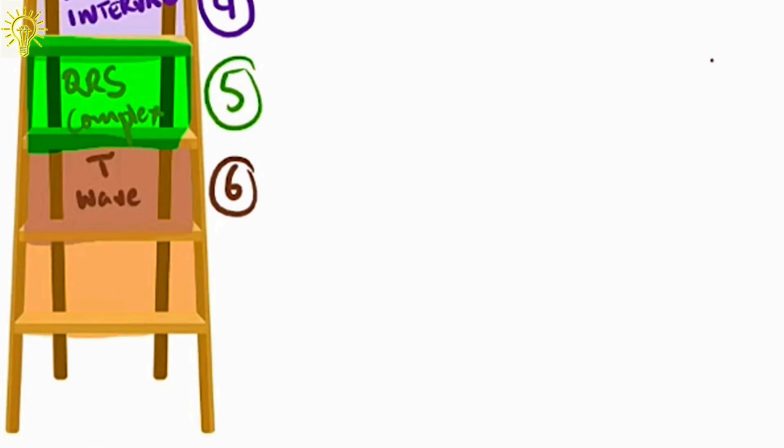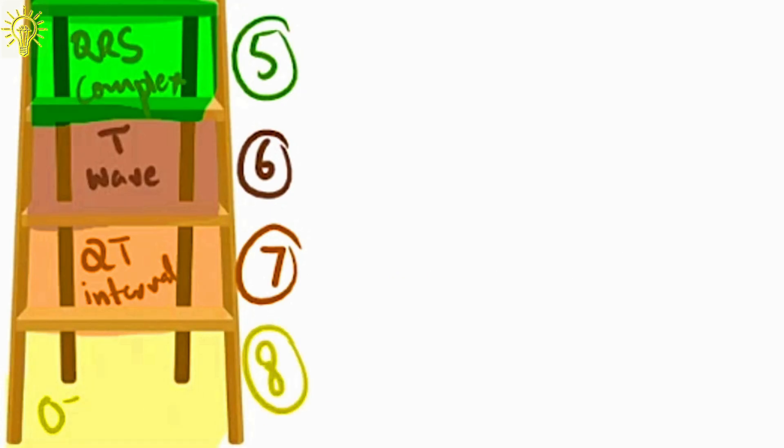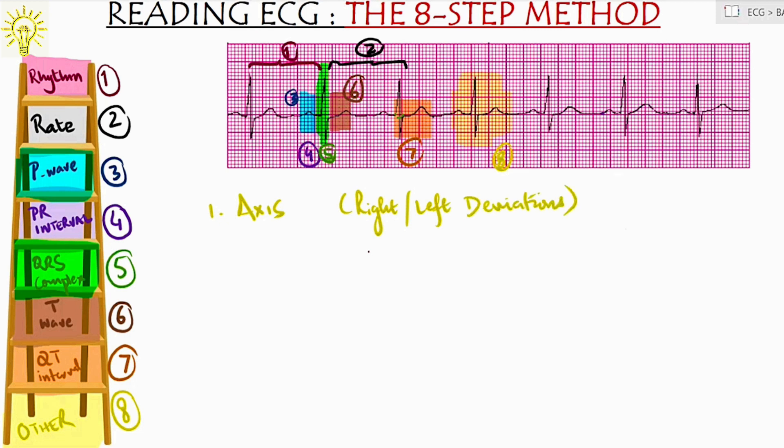Step 7: The QT interval. Normal value between 0.36 to 0.44 seconds, which is around 9 to 11 in small boxes. Step 8: Observe other features like axis deviation between lead 1 and AVF. For that concept, I am giving the link in right upper corner.